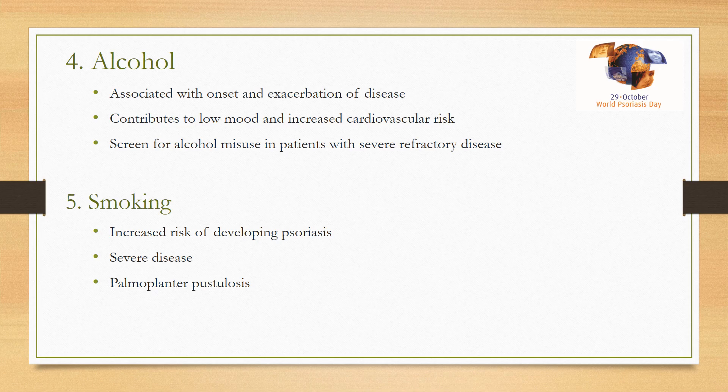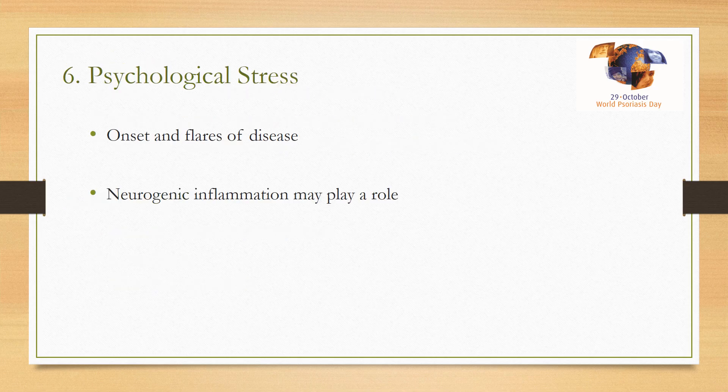Alcohol is associated with onset and exacerbation, and contributes to low mood and increased cardiovascular risk. If a patient with refractory psoriasis presents, please don't forget to inquire about alcohol. Smoking can also result in increased risk of developing psoriasis and worse disease, and is more prominently associated with palmoplantar pustulosis, particularly in women.